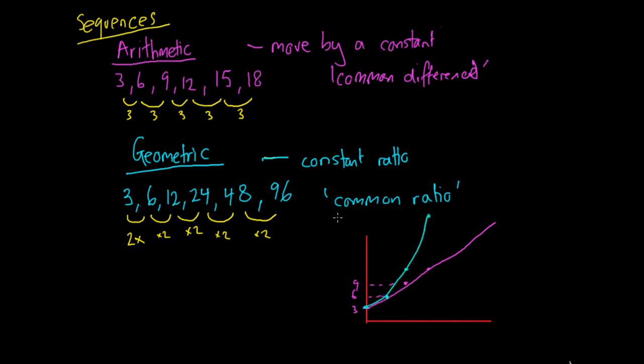So geometric sequences have a common ratio and a curved shape, whereas arithmetic sequences move by a constant, and then they have this constant shape up over time. So that's the difference between the two. I'll go into more detail, and I'll put out a video for each of them. Thanks, guys.